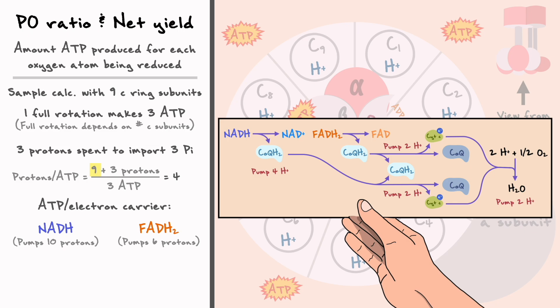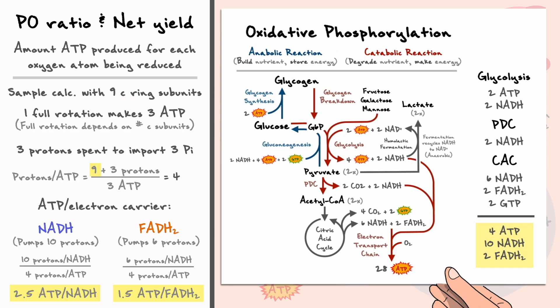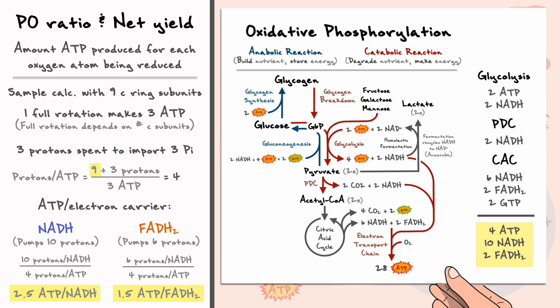This allows us to compute the P/O ratios, which for NADH is 2.5 and for FADH2 is 1.5. When we consider the total amount of NADH and FADH2 made throughout the degradation of glucose, 10 NADH are responsible for 25 ATPs and 2 FADH2 are responsible for 3 ATP molecules, which gives us a total yield of 28 ATP from the electron transport chain.